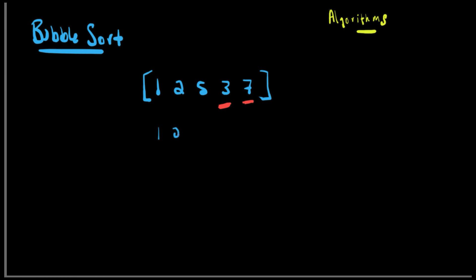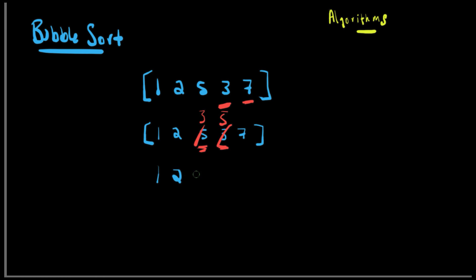So we have one, two, five, three, seven. We're going to compare three and five. Is three less than five? Yes. So we're going to cross out three, turn that to five, and five becomes three — they both get swapped. And then we create a new set: one, two, three, five, and seven.